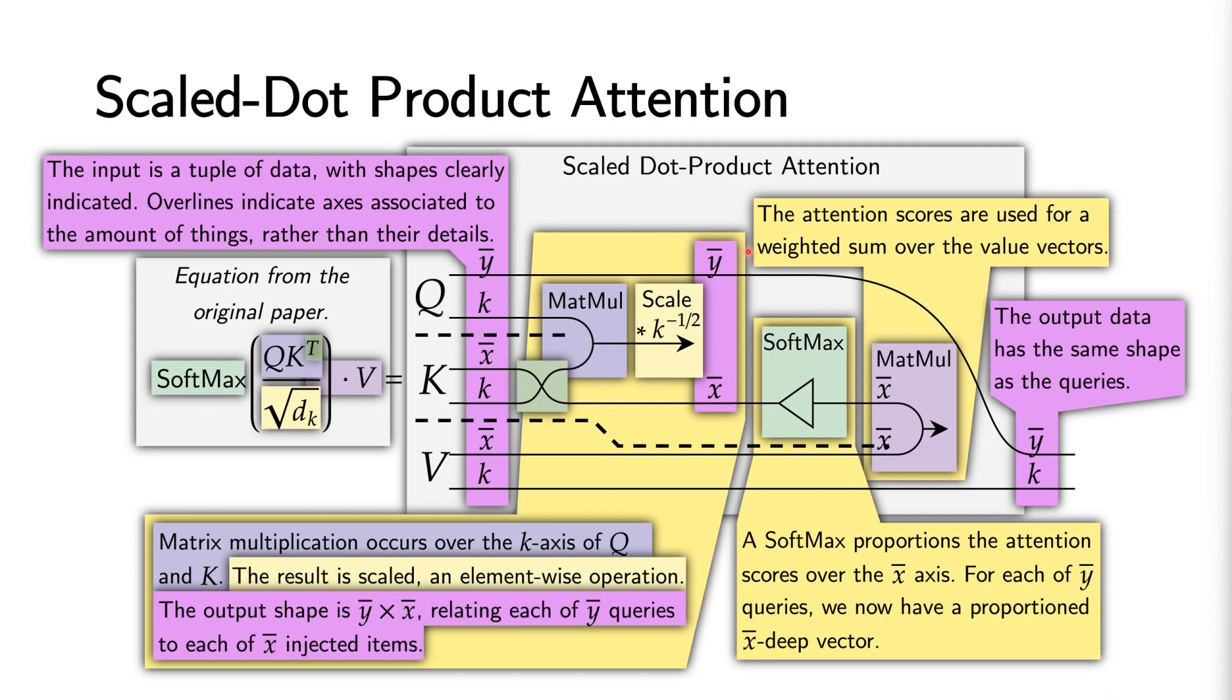In the middle, we observe that the size of the attention weights is y by x. The final data output can be seen to be y by k, the same size as the query inputs.